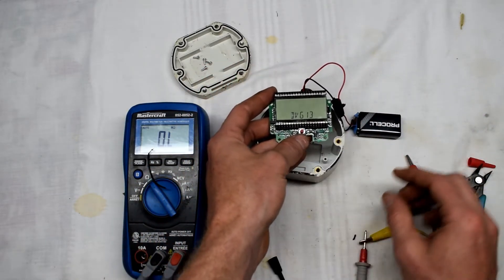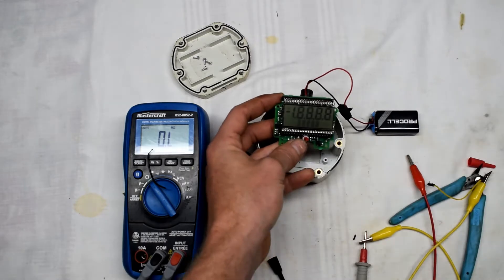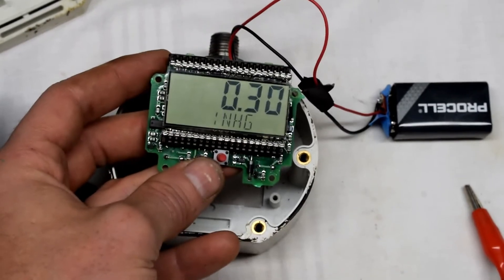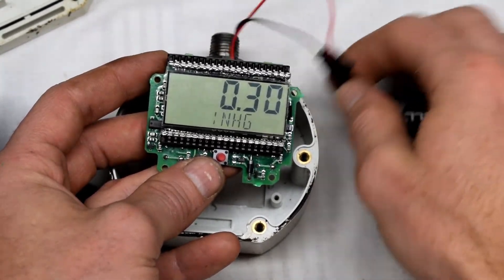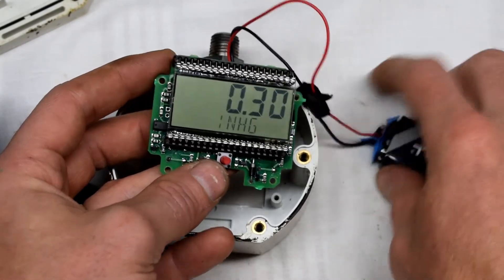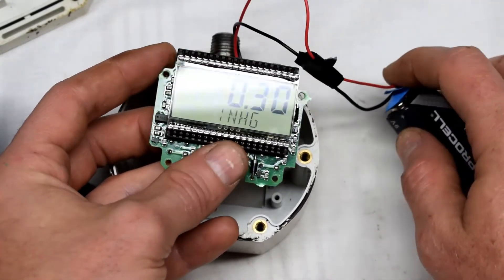Now you can see it already turns on with the display. It's measuring the pressure at 0.3, initializing. If I shake the battery connector, it has a solid connection. That was the issue.